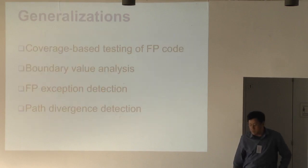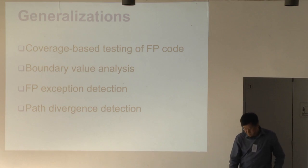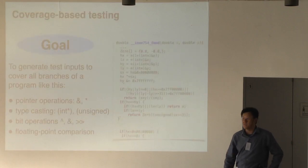This idea can be generalized to various other things. Suppose we want to do coverage-based testing. That is, we want to cover all the possible branches in the program, all the realizable ones, or we want to do boundary value analysis, detecting floating point exceptions, or detecting path divergence. For example, maybe in the floating point one, somehow you take this control flow path with the same value in, imagine we have a high precision arithmetic, they take a different control flow path.